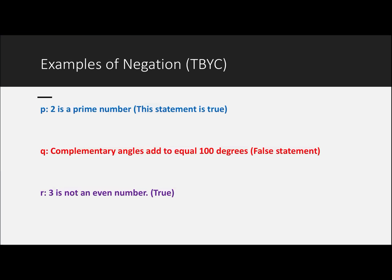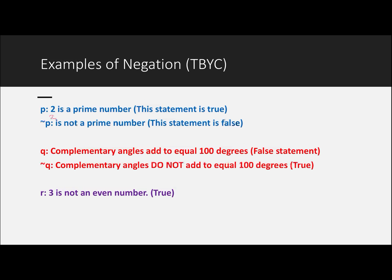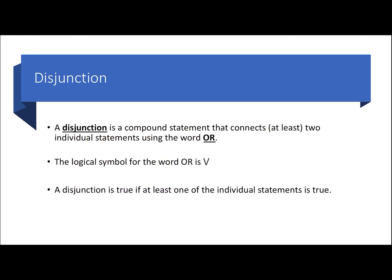On this slide, pause the video and write the negation of each statement. For statement P you should have gotten: 'Two is not a prime number.' For statement Q: 'Complementary angles do not add to equal 100 degrees.' For statement R: 'Three is an even number.' Notice that R's original statement contained the word 'not,' and the negation simply removed it.